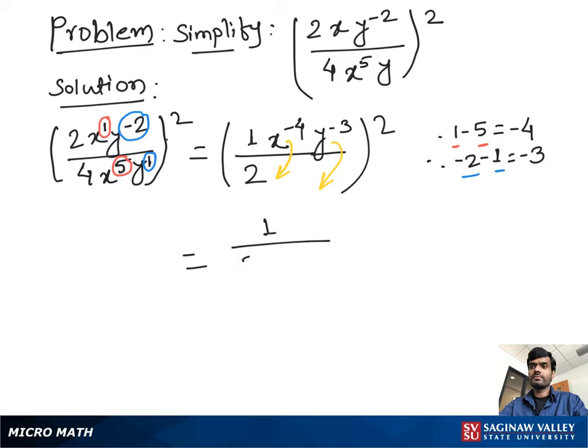Still we have to do the square to get our final answer. 1 over 2 squared which is 4, and x to the fourth squared which is x^8, and y to the third squared which is y^6.